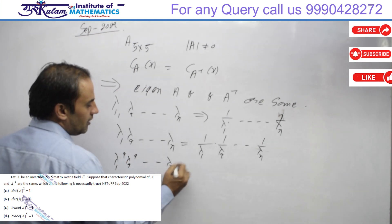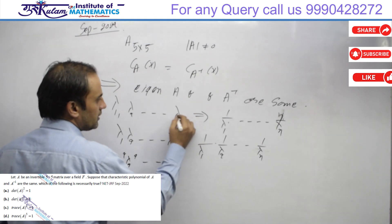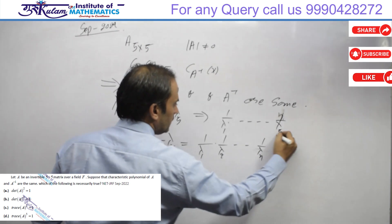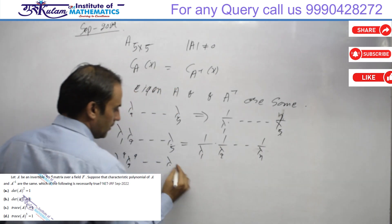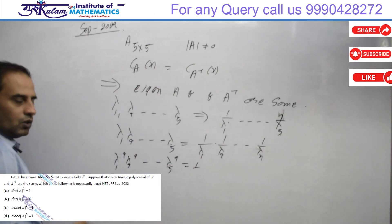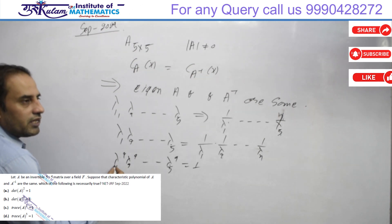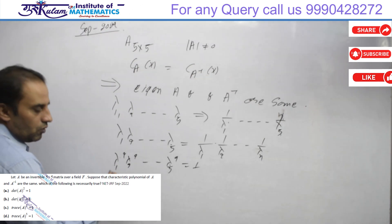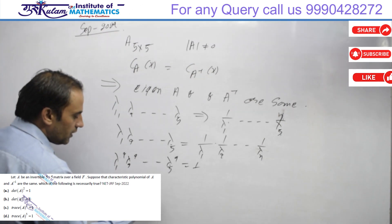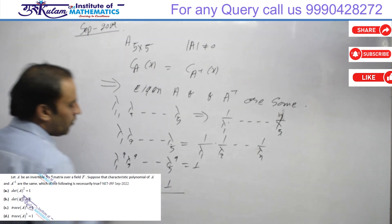From this we get λ₁²·λ₂²·...·λ₅² = 1 (since it's a 5×5 matrix). This is nothing but the product of eigenvalues of A², which equals the determinant of A². Therefore, determinant of A² equals 1.